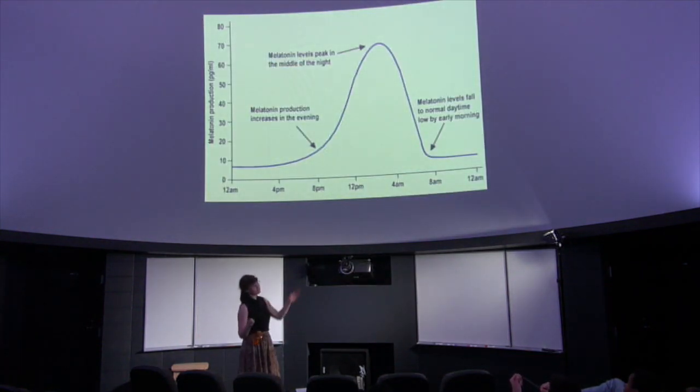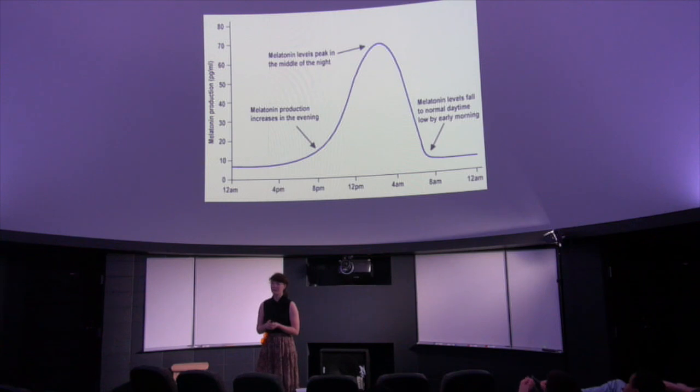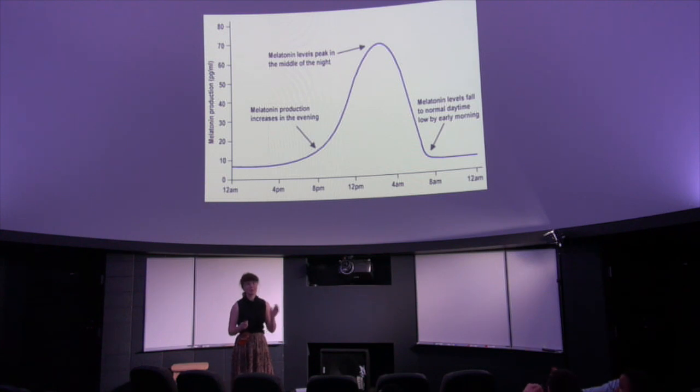So this is a graph of the circadian rhythm. As you can see, melatonin, which is the chemical that regulates sleep, should rise during the evening, peak in the night, and then fall sharply as soon as the morning comes. And this chemical doesn't just regulate sleep, it's also been linked to several other functions such as how alert you are during the day, how well you can concentrate, it's been linked to your mood and to the very balance of hormones in your body.